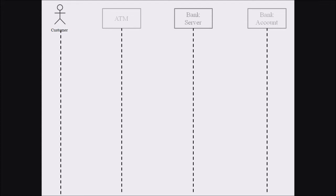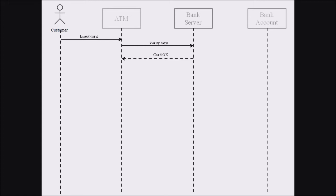The first communication in an ATM transaction is inserting the ATM card into the ATM machine, which is a transaction between the customer and the ATM. The ATM machine then verifies the card details with the bank server, making the second communication between ATM and bank server. The bank server responds with a card okay message, represented as a dotted arrow indicating it is an acknowledgement.